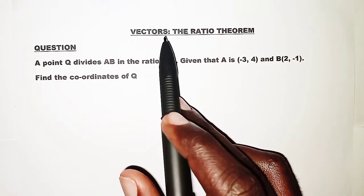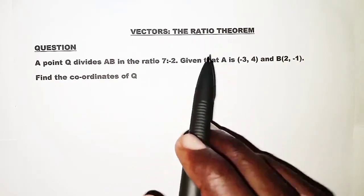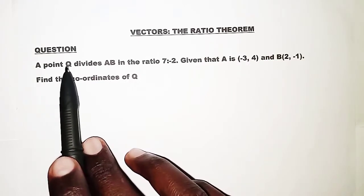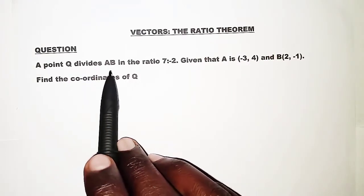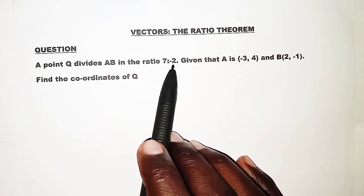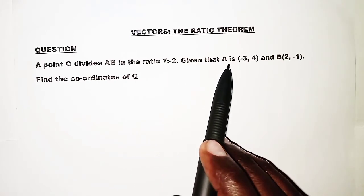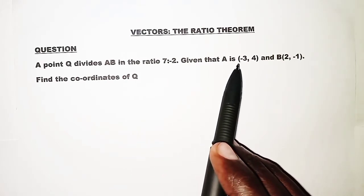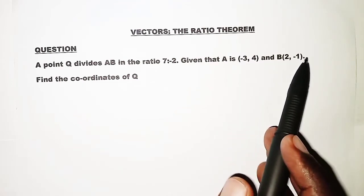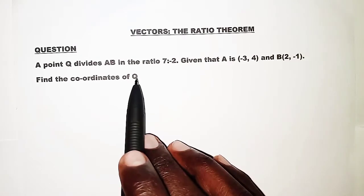Welcome to today's vectors lesson. We're going to use the ratio theorem to solve our problem. The question reads: a point Q divides AB in the ratio of 7 to negative 2. This is external division. Given that A is (-3, 4) and B is (2, -1), find the coordinates of Q.